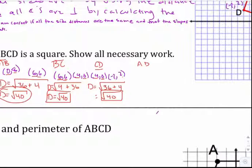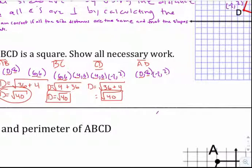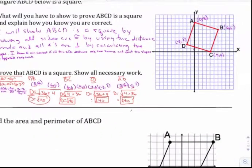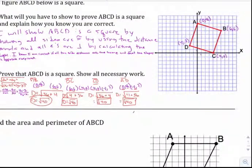Last distance to check is AD. A is at (0, 8) and D is at (-2, 2). The change in x is 2 — squared, you get 4. The y's go from 8 to 2, that's a difference of 6 — squared, you get 36. So this distance is also the square root of 40. That proves all sides are the same, so we've worked it up to a rhombus. Now we have to check the slope.